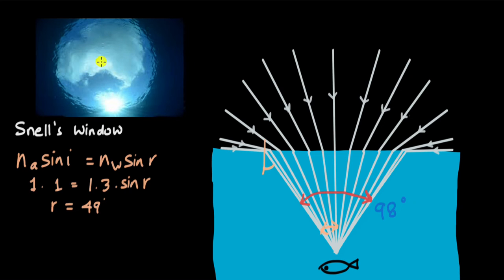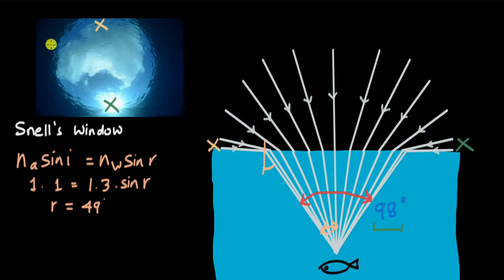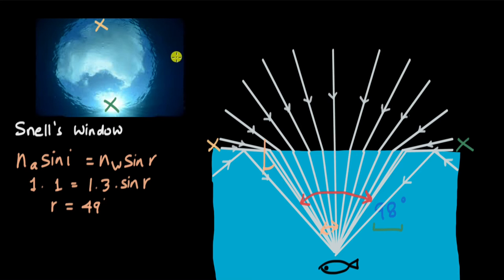The entire 180 degrees of horizon is compressed to a cone of 98 degrees. But where does total internal reflection come in? The area outside the window is darker blue or black. Light rays coming to the fish at an angle beyond 98 degrees will be coming from the sides of the pond, and those undergo total internal reflection. So what the fish sees as dark blue or black is actually the bottom of the pond — that's why it's dark in color.